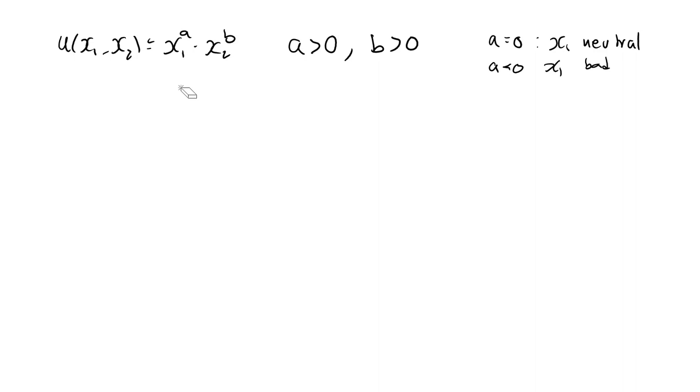So let's have a look at an indifference curve for this utility function. An indifference curve is a level curve of this equation. So I need to set this equal to some number u zero. In order to draw this indifference curve, we make this implicit relationship between x1 and x2 explicit in x2. And this will always be possible for a Cobb-Douglas utility function when both a and b are strictly positive.